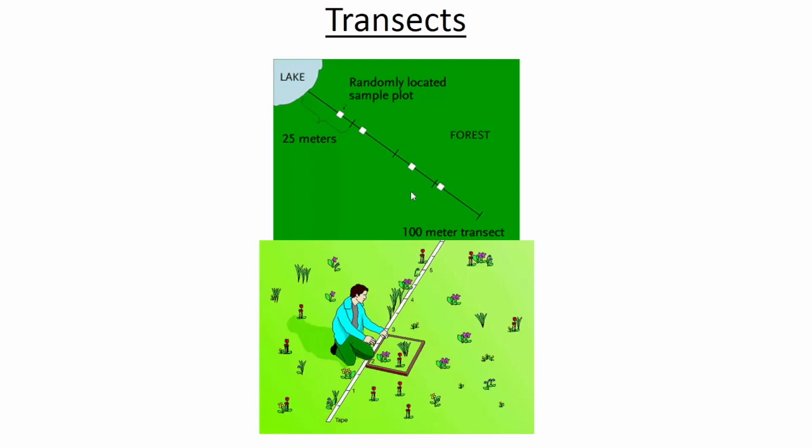You can also use quadrats in what we call a transect formation, where instead of a grid area you take a line running from one place to another. You can just measure out a distance. Here they've got a hundred meter transect from a lake into a forest, and they've done 25 meter steps. Within these 25 meters they would pick a random number exactly the same way as before. You can see the exact same technique being completed just on a line instead of a grid. If it's on a line we say this is a transect.